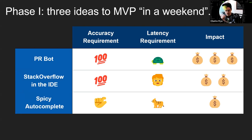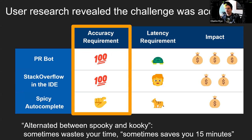Each idea had different potential impact and different requirements. A PR bot needs to be right — bad PRs from automated tools are very frustrating — but doesn't need to be fast. Autocomplete needs to be very fast, faster than a person can type, but doesn't need to be right all the time since we're used to ignoring autocomplete. User research revealed that the primary challenge was model accuracy: it was really hard to achieve the super-high accuracy that a PR bot or chat experience required. They found a long tail where occasionally there'd be a huge time-saver, but most of the time it was mediocre or even a time-waster.